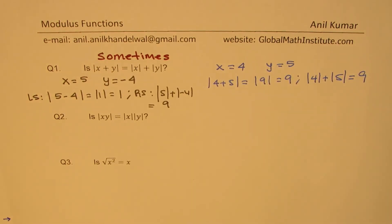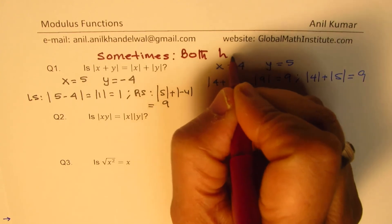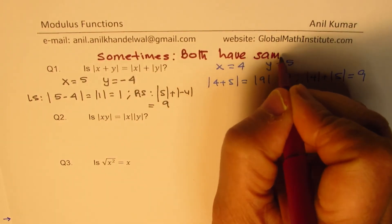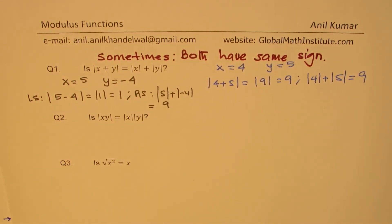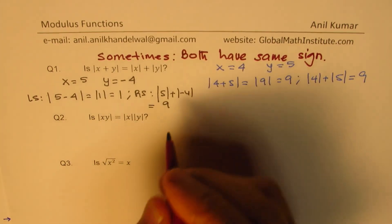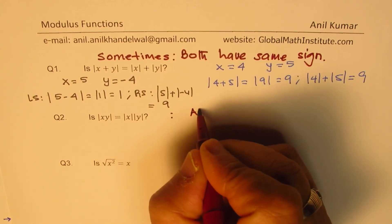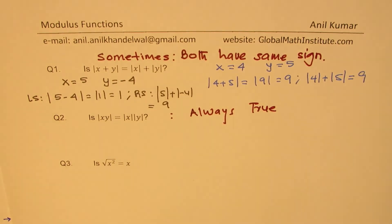This identity holds if both x and y have the same sign — both negative or both positive. For the second identity: is the absolute value of x times y equal to the product of the absolute value of x and the absolute value of y? If you work it out, you will find that this one is always true.